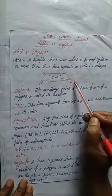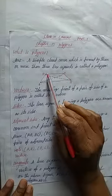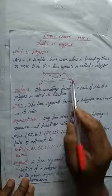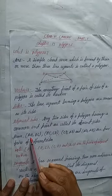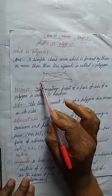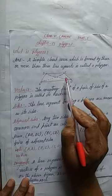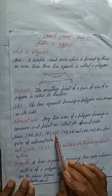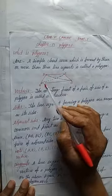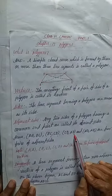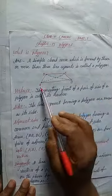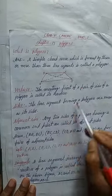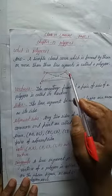Similarly, BC and CD have C as the common endpoint. So the four pairs of adjacent sides are: AB and BC, BC and CD, CD and DA, and DA and AB.